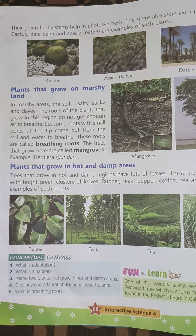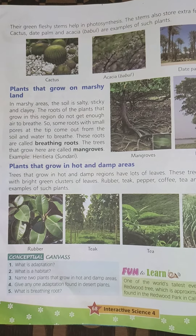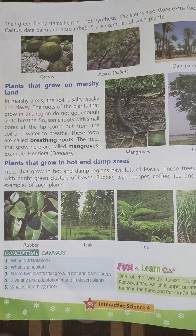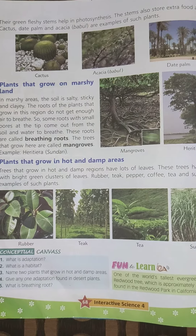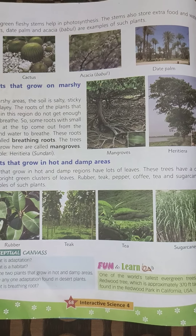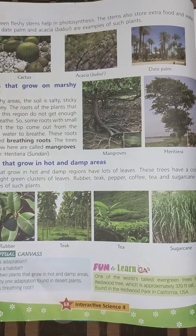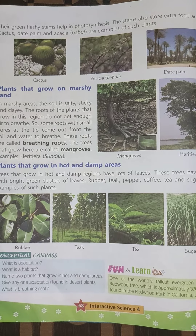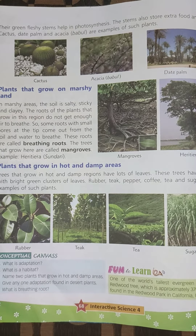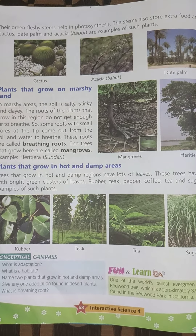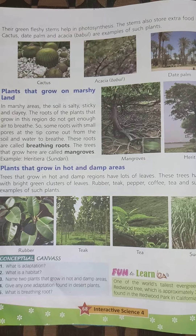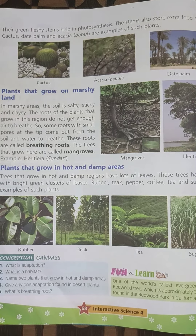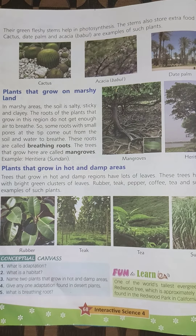Plants that grow in hot and damp areas — trees that grow in hot and damp regions have lots of leaves. These trees have a crown with bright green clusters of leaves. Rubber, tea, pepper, coffee, and sugar cane are examples of such plants.